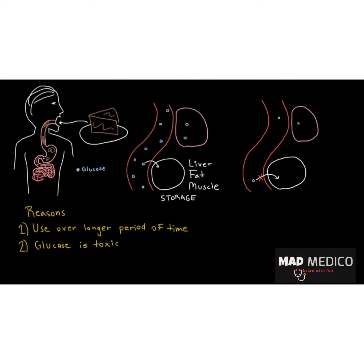The answer — as you might have guessed from the title of this video — is insulin. Insulin is a molecule that tells your storage cells to take up glucose when there's a lot of glucose in the blood, and does not signal storage cells to take up glucose when blood glucose is low. So insulin is present in the blood when glucose is high, and absent when glucose is low.